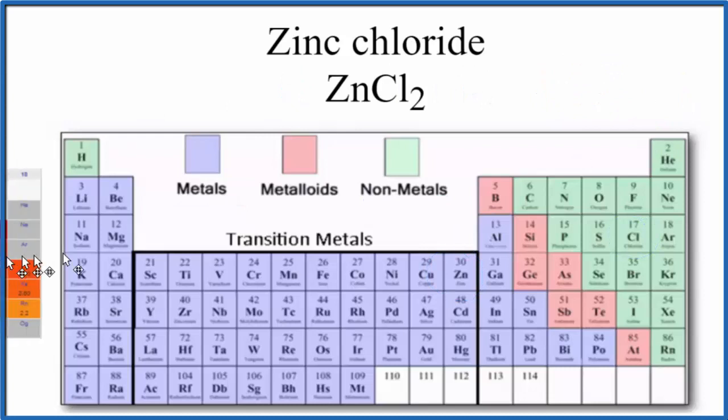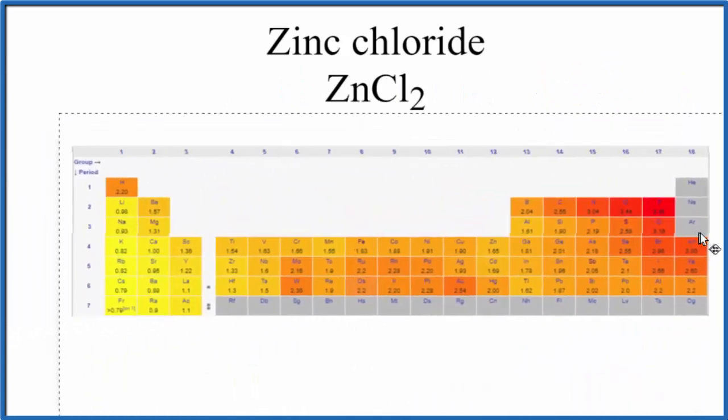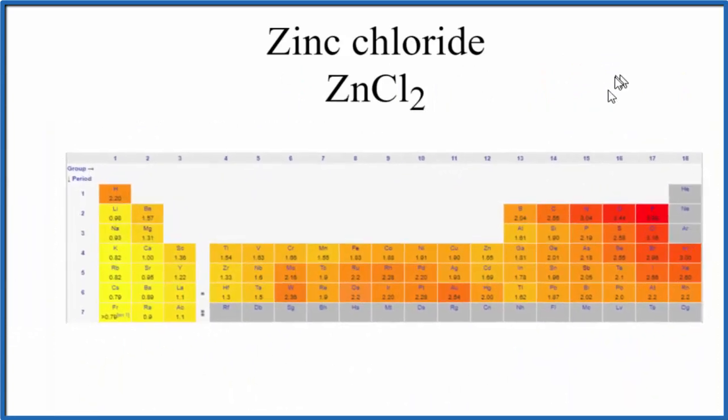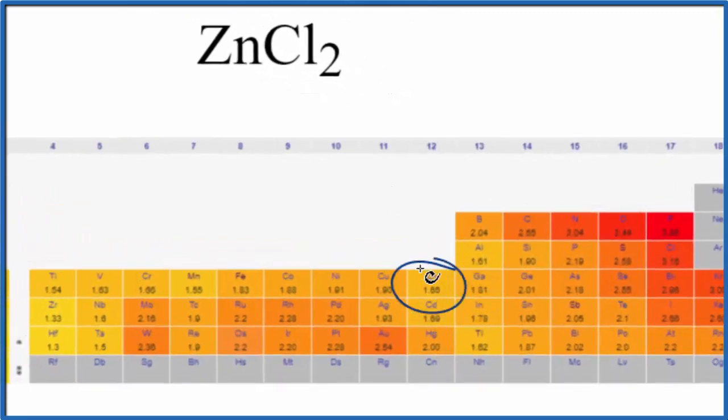We could also look at data on the electronegativity difference between the zinc and the chlorine atoms. Here's a periodic table broken down with the electronegativity differences written up here. When we look at zinc, we have 1.65, that's its electronegativity value. Chlorine over here, we have 3.16. If we look at the difference between these two numbers, we'll get 1.51.